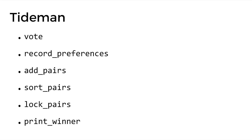Once you've implemented these six functions — vote, record_preferences, add_pairs, sort_pairs, lock_pairs, and print_winner — you'll have implemented all that you need to simulate an election using the Tideman voting system. My name is Brian, and this was Tideman.